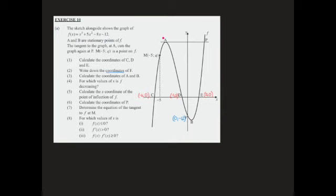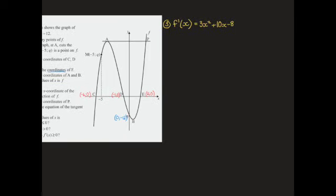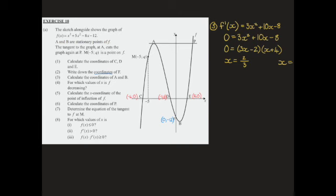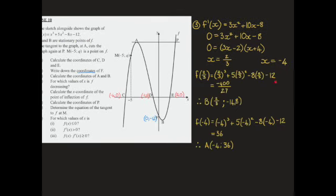The next question: calculate the coordinates of a and b. We spoke about a and b being stationary points. We're doing question 3. In order to find stationary points, we need to find the first derivative. That's going to be 3x squared plus 10x minus 8. At stationary points, our first derivative is equals to 0 and then we solve by factorizing. Now that I've found the value for x at those two stationary points, I then need to substitute it back into the original function to find the corresponding y-coordinate for each. I've substituted into the function and found the coordinates. b is at two-thirds and a will be where x equals negative 4.